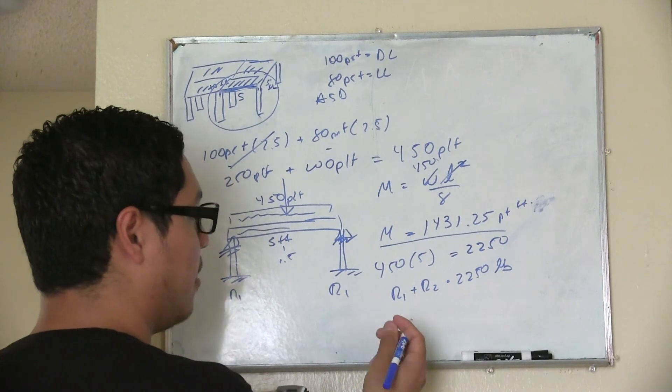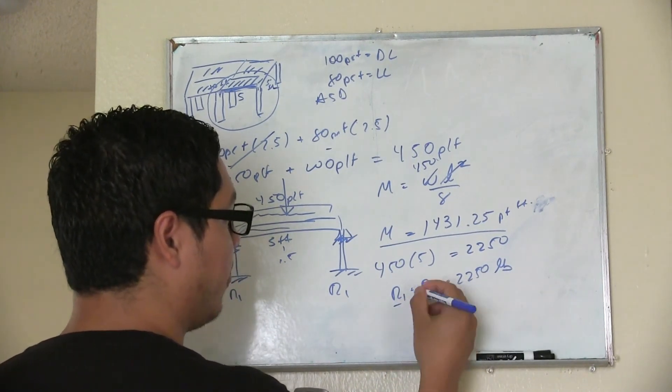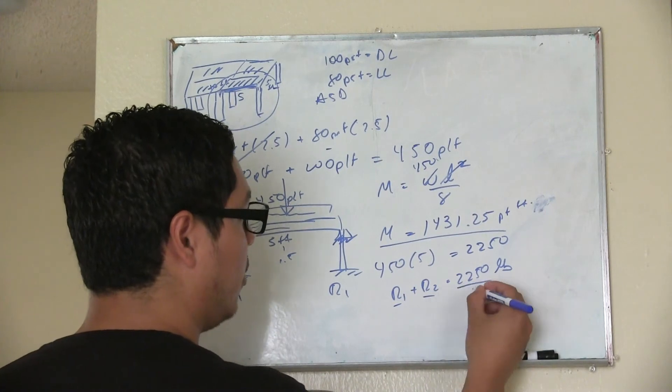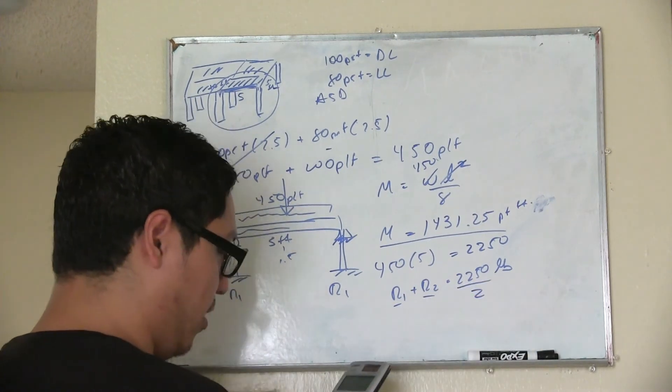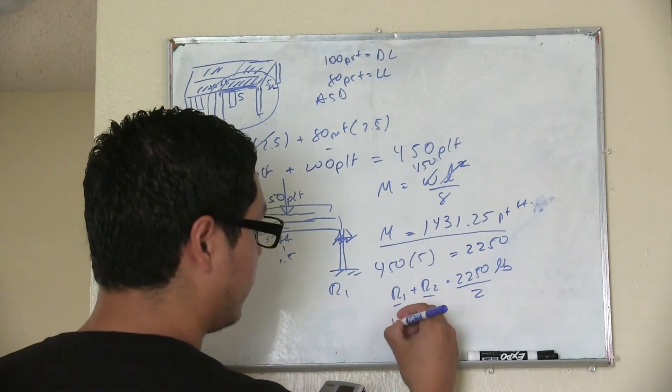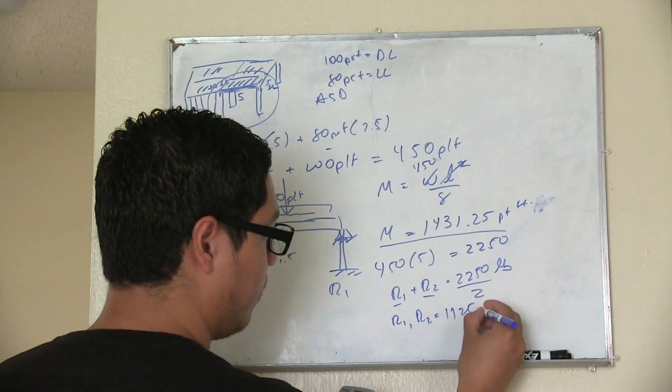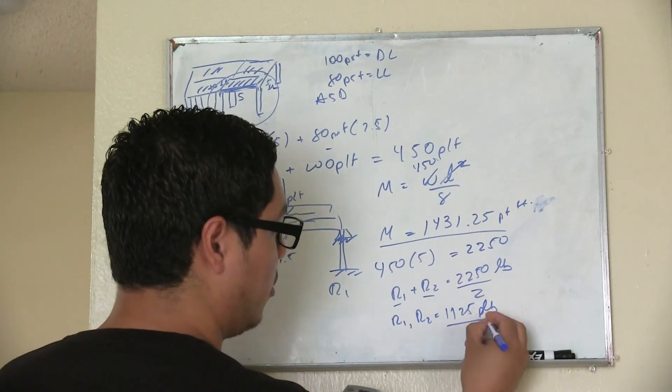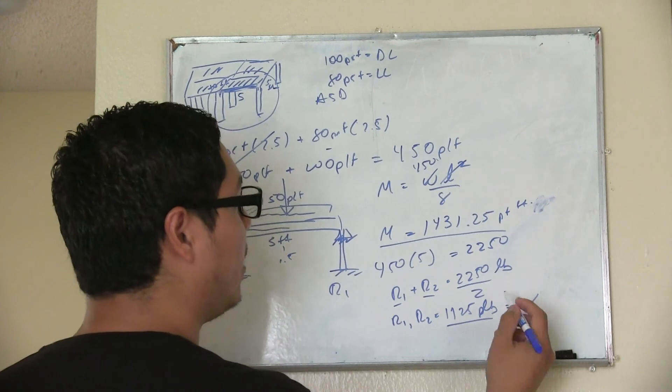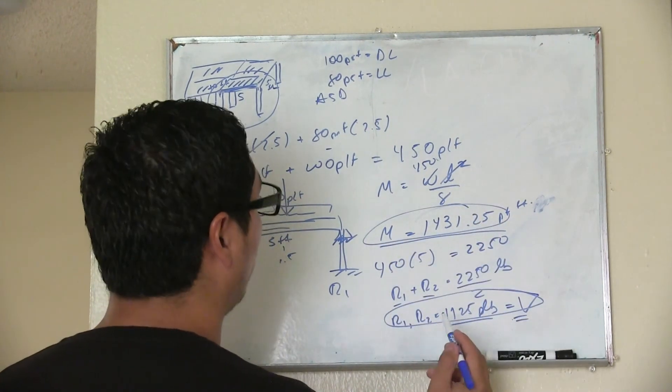And just by simple analysis and stuff like that, you're going to assume that each reaction is going to receive half of this load. So this would be reaction 1 and reaction 2 would be equal to 2250 over 2 pounds. So this would be your shear, maximum shear. So basically your beam has to be able to take this load.